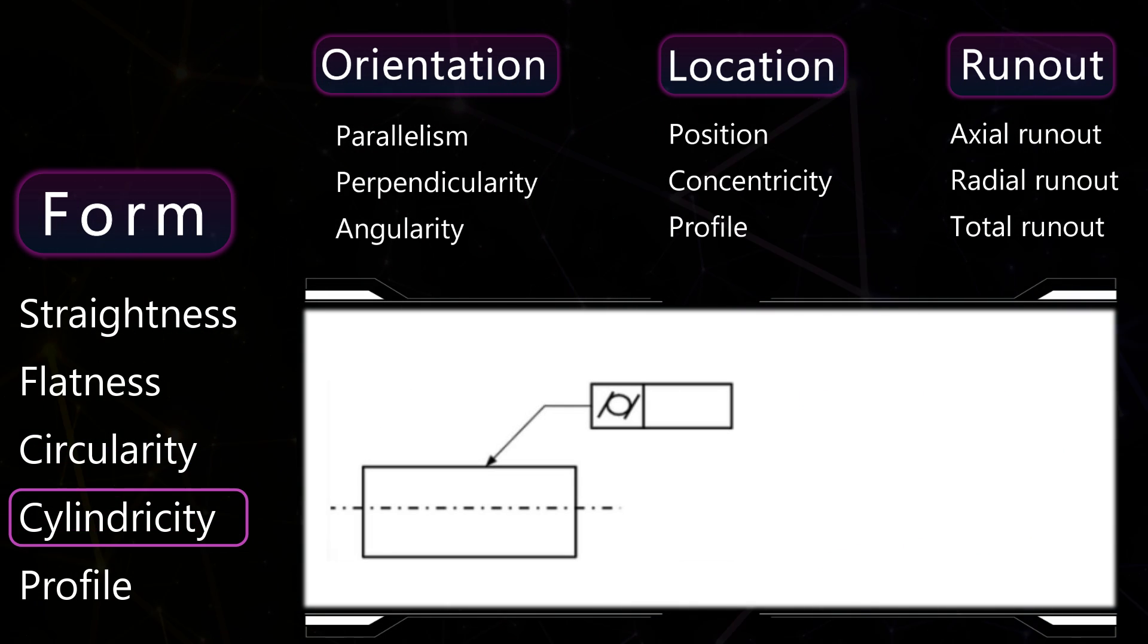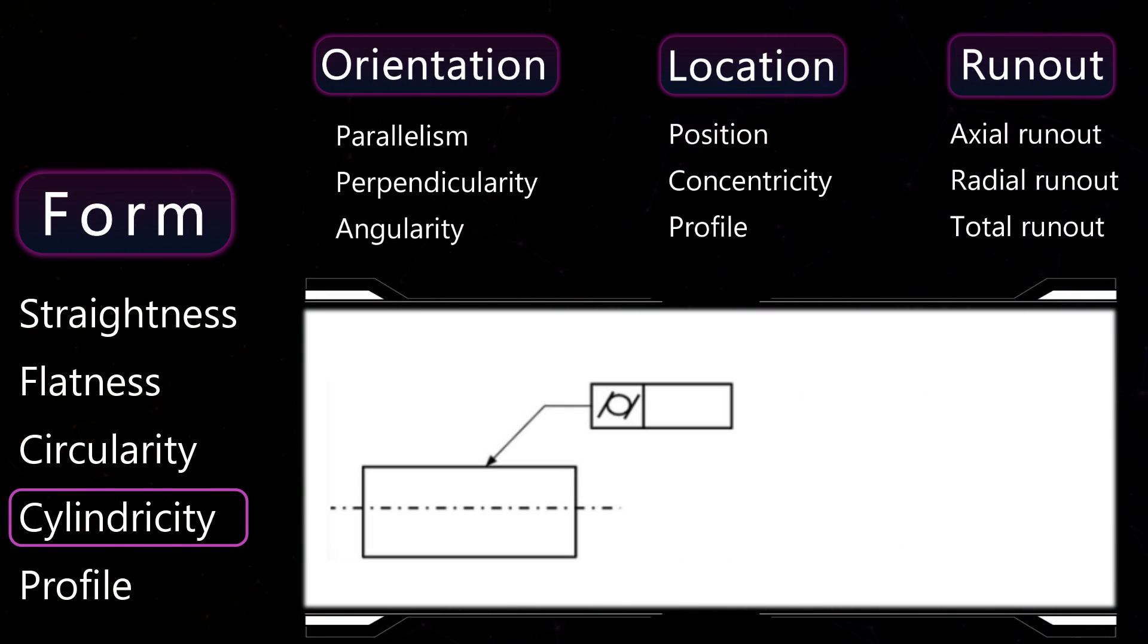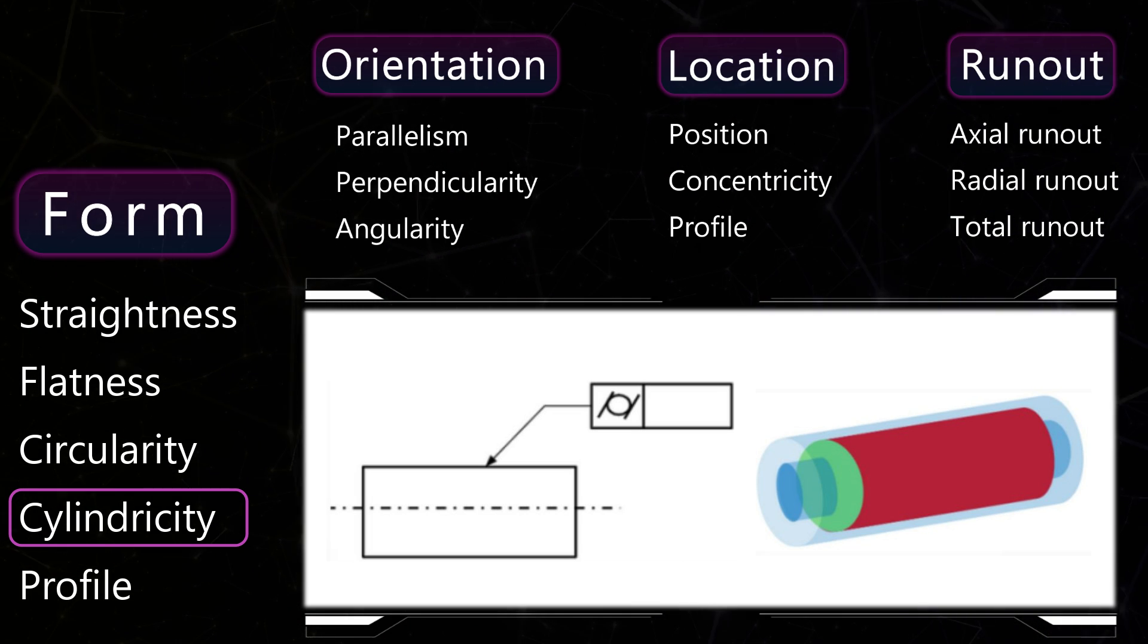Cylindricity. Same as circularity, except that instead of two circles, two cylinders define the tolerance zone.